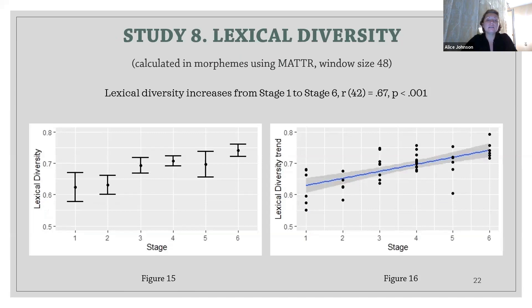Finally, we investigated lexical diversity in morphemes — a measurement of how many different morphemes there are in a text. We used the method that calculates the moving average type-to-token ratio for morphemes, because this method is the least dependent on the sample size. Figures 15 and 16 show how lexical diversity of the child-directed speech increases from stage one to stage six. The Pearson stats show that the lexical diversity of the mothers' speech and the stages of the children's linguistic development are strongly positively correlated.